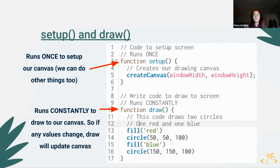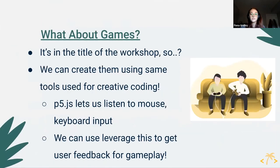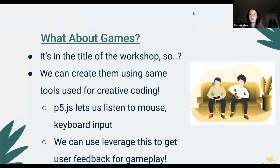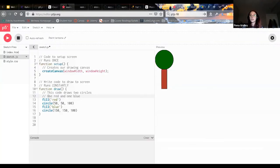The setup function runs only once at the beginning when you start the program, and then draw runs until you close that program. What about games — it's in the title of the workshop! We can also use p5.js to create games. There are interactivity functions and methods built into p5.js — it can track mouse movement, keyboard presses, and mouse clicks — so you can use these visualizations to create interactive programs and games.